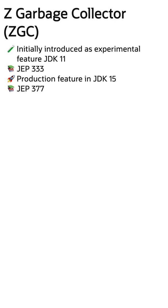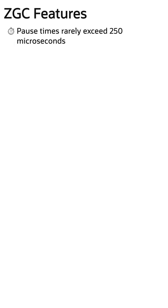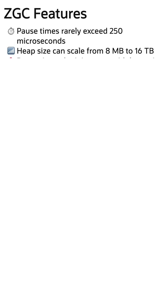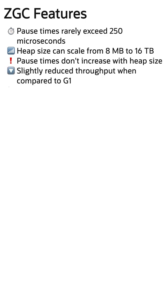ZGC was designed with the goals of low latency and scalability, with current max pause times of about 250 microseconds, and is able to scale in heap size from 8 megabytes to 16 terabytes. Notably, pause times do not increase with heap size, though this does come with a trade-off of a slightly reduced throughput.